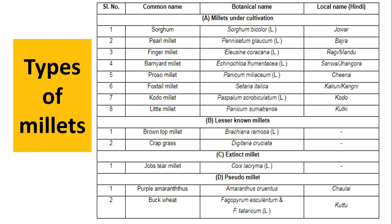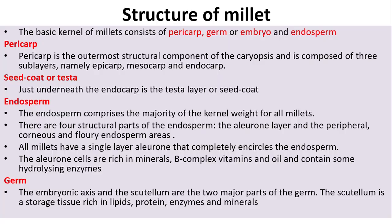Types of millets: the table shows the types of millets. On the left side we can see the common name, botanical name, and local name. For example, sorghum's local name is Javar and its botanical name is Sorghum bicolor. Please read the table carefully and prepare for the exam.